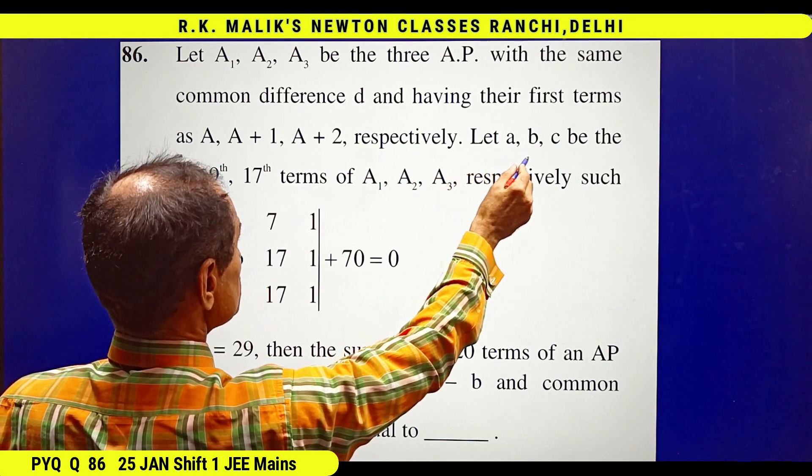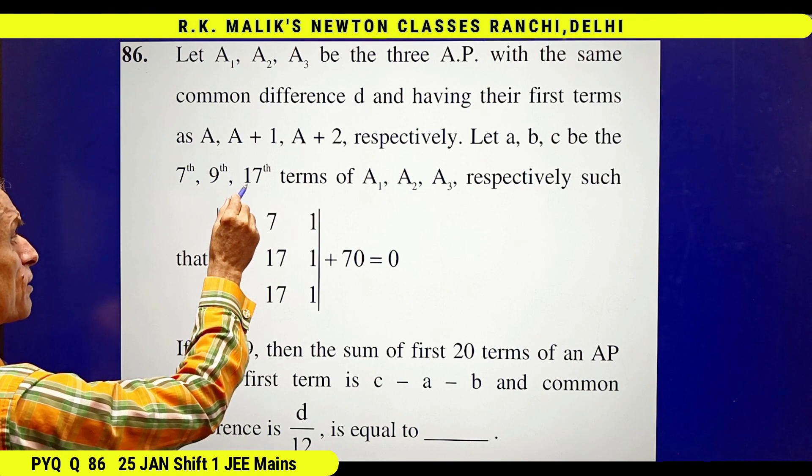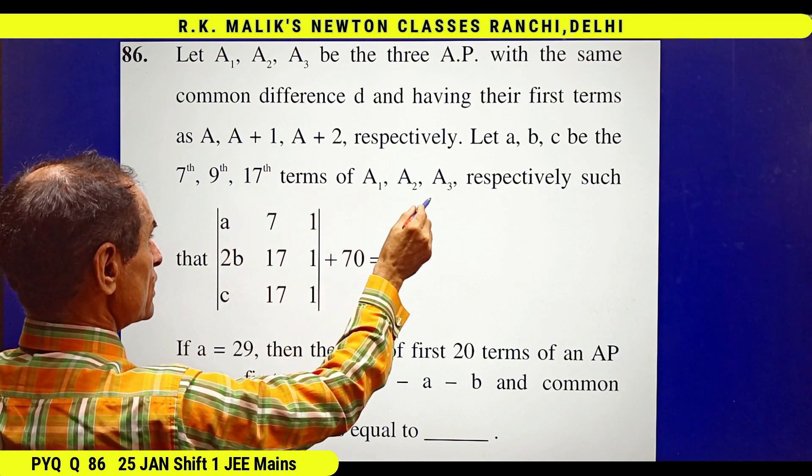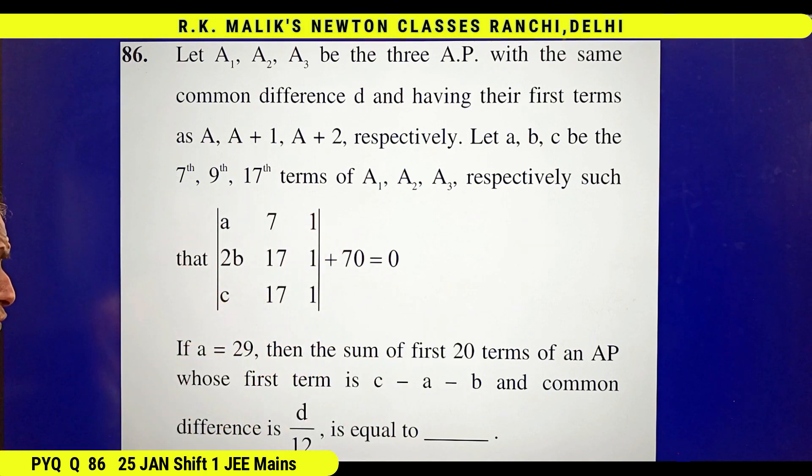Let small a, small b, and small c be the 7th, 9th, and 17th terms of the sequences A₁, A₂, and A₃ respectively, such that this equation is true.